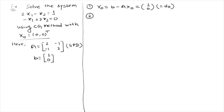In the second step, we calculate α₀, the step length, which is R⁰ᵀR⁰ divided by D⁰ᵀAD⁰. Note that D⁰ and R⁰ are the same vector here. Computing this gives α₀ = 1/2.